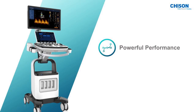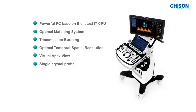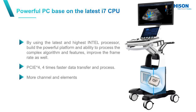Let's move to the second part: Powerful Performance. The XBIT-90 is based on the latest i7 CPU and has potent imaging technologies such as optimal matching system, transmission bursting, optimal temporal-spatial resolution, and more. The PCI interface brings a faster processing speed — up to 4 times faster than traditional technology. You will feel every operation can be done in seconds.